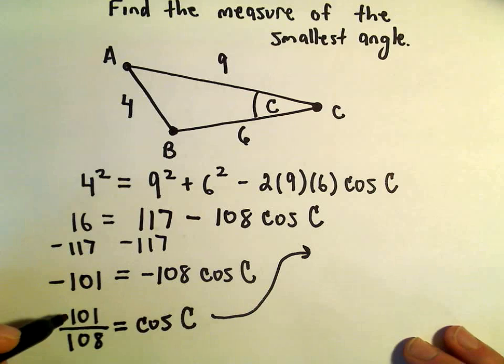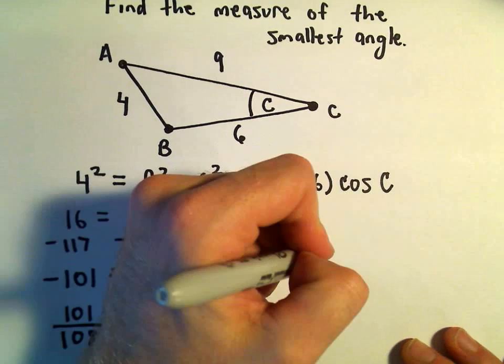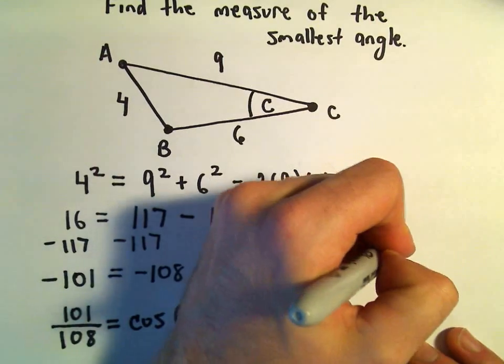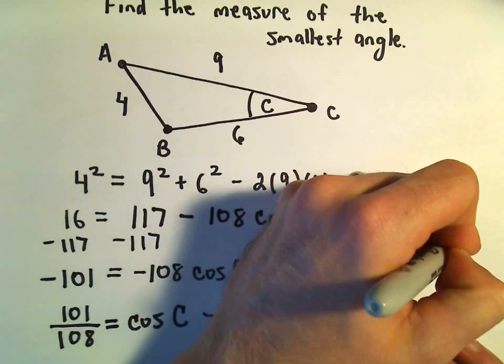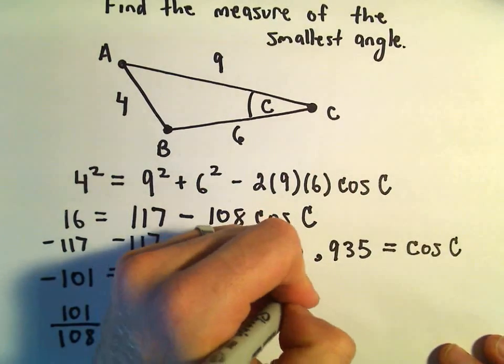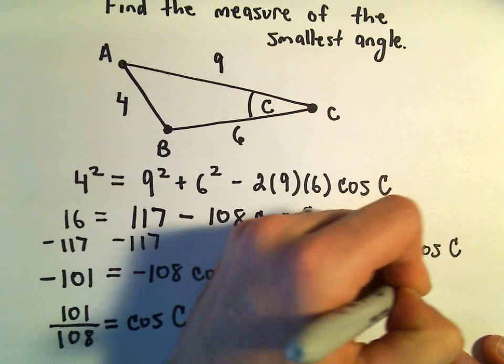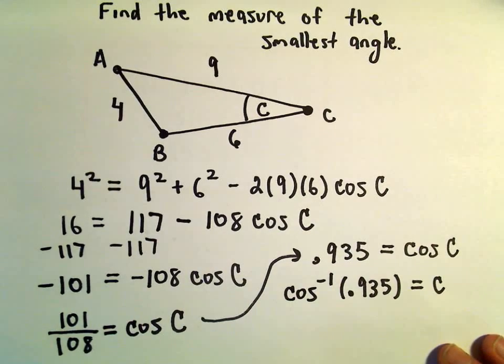101 over 108, I'm getting that to be 0.935 equals cosine of C. Now if we take the inverse cosine of both sides, that will give us angle C.